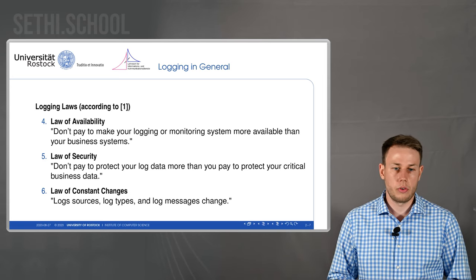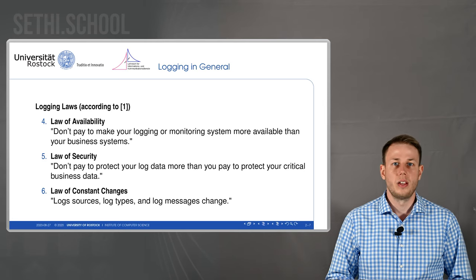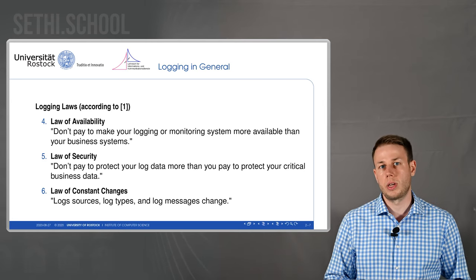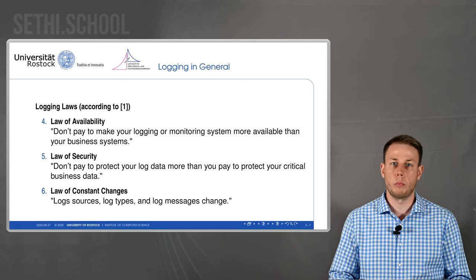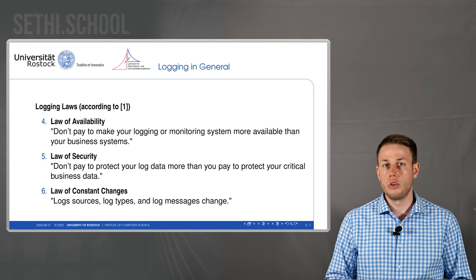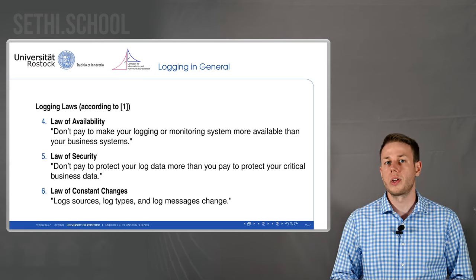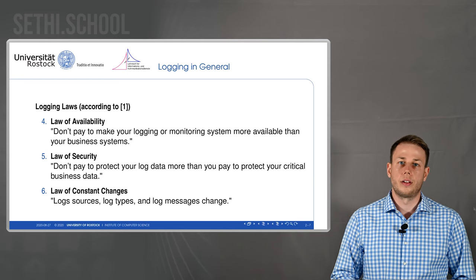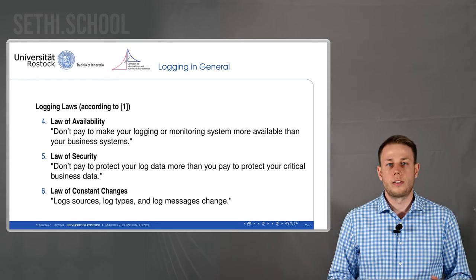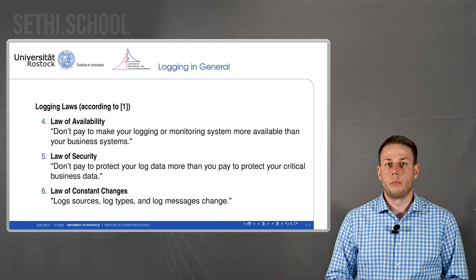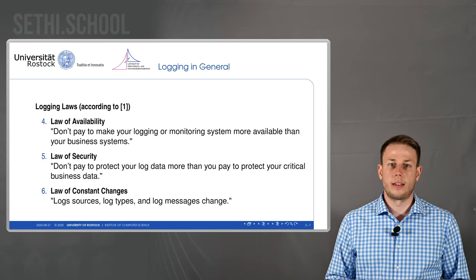The sixth law is the law of constant changes: log sources, log types, and log messages change — especially nowadays with a lot of new technology coming to market. With the Internet of Things, so many new devices come to your company every month and every year, and with these new devices the logs also change quite frequently. You need to keep the process running: which logs do you have to consider, how can you look at them, and when do you need to raise an alert?